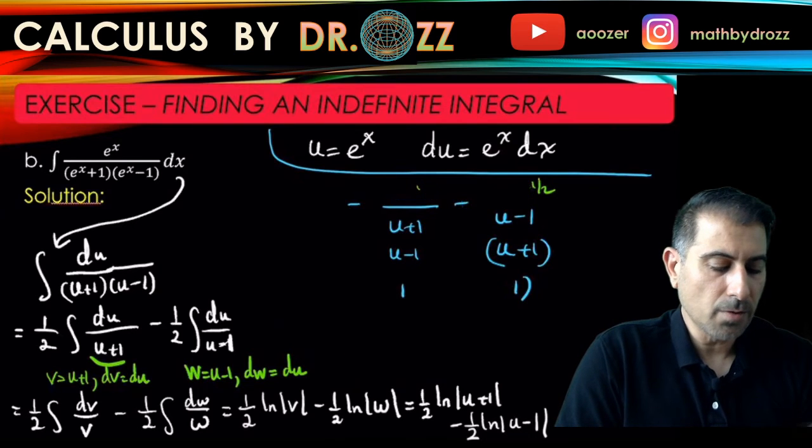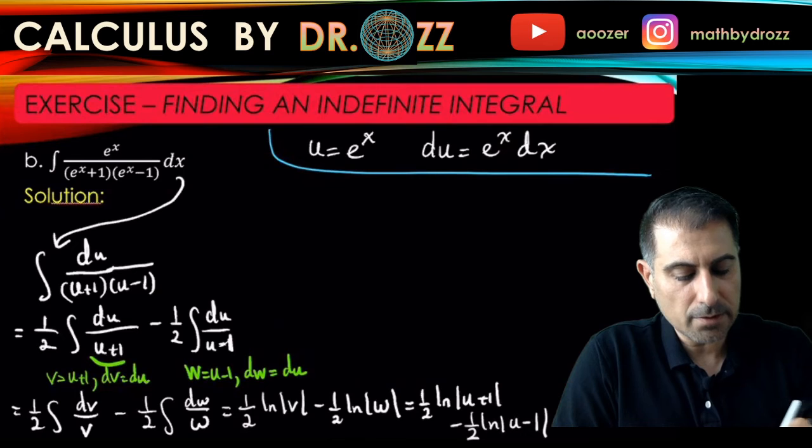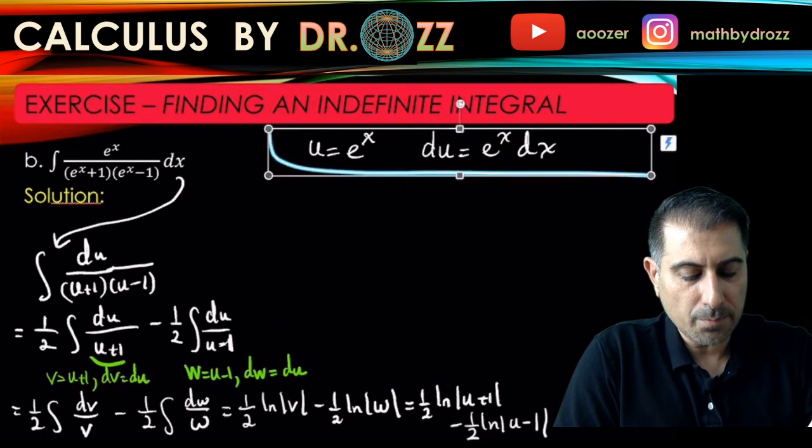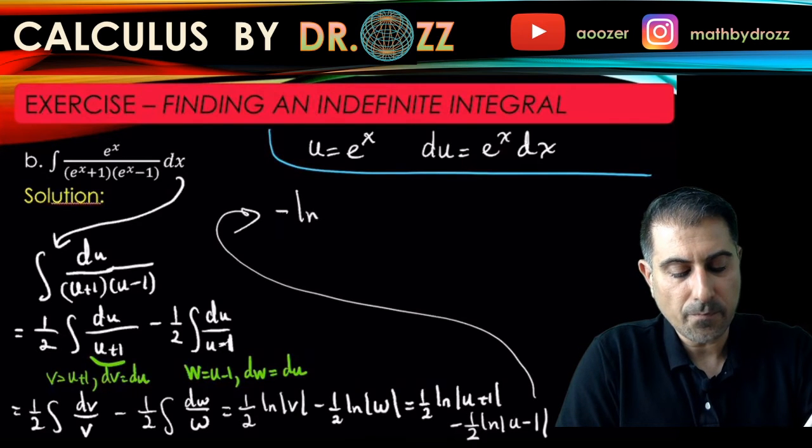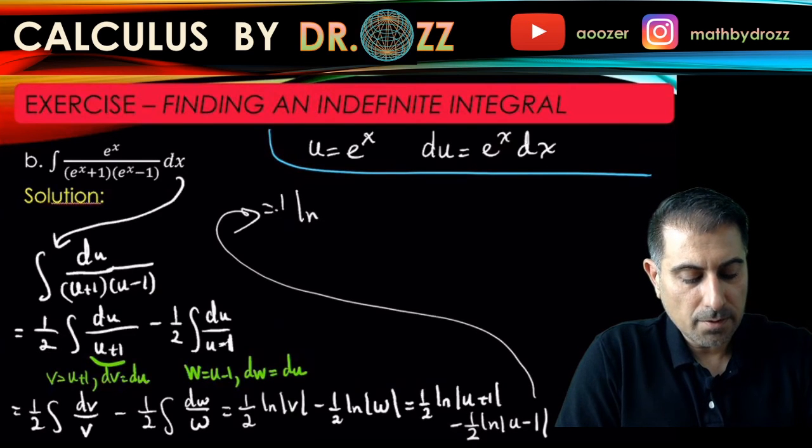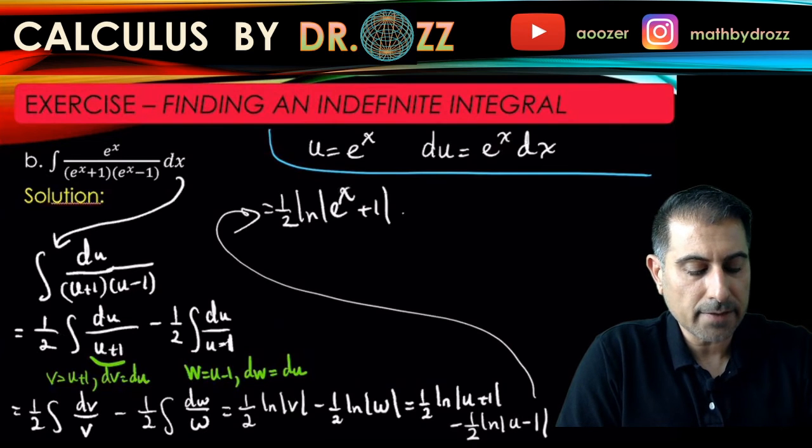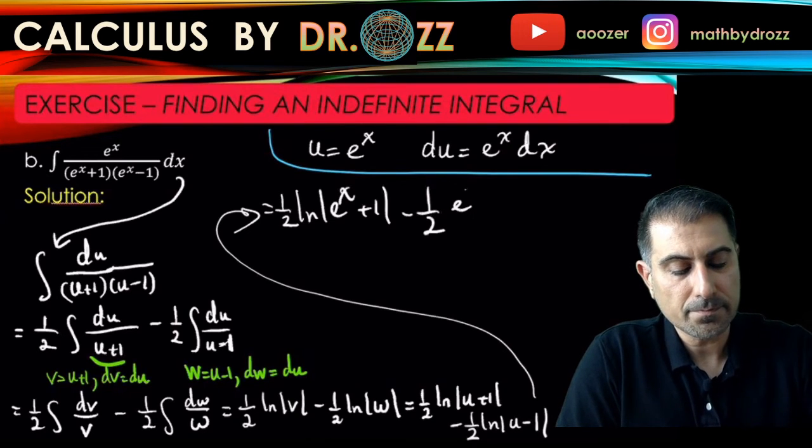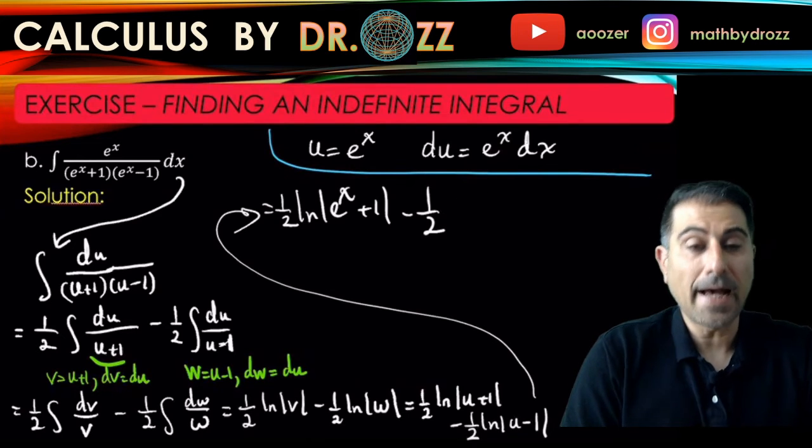Alright, so u equals e to the x. So all I'm going to do here is just come back and plug in: 1/2 ln(e^x + 1) minus 1/2 ln(e^x - 1).